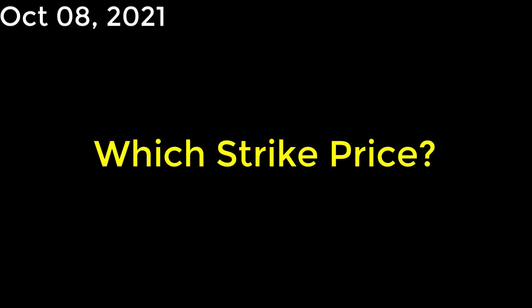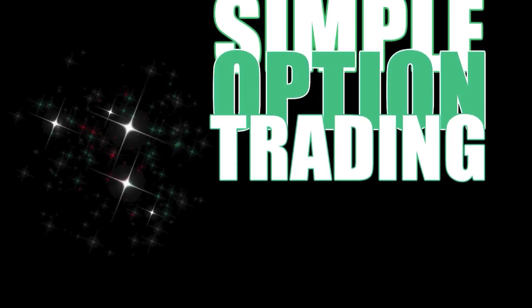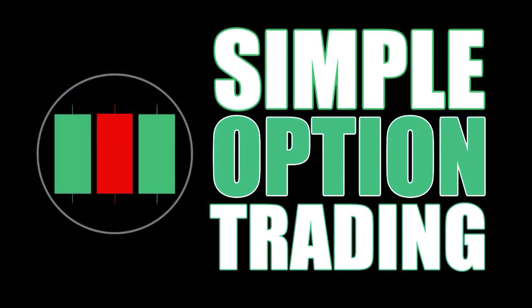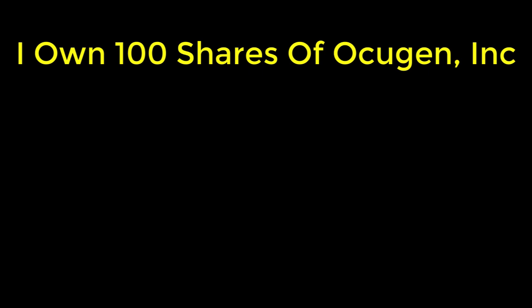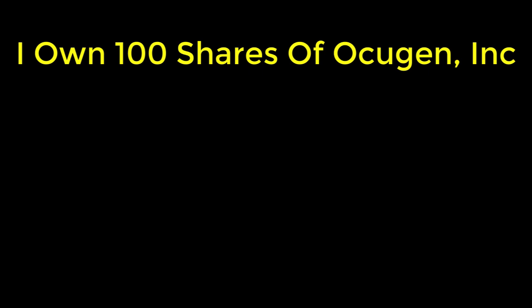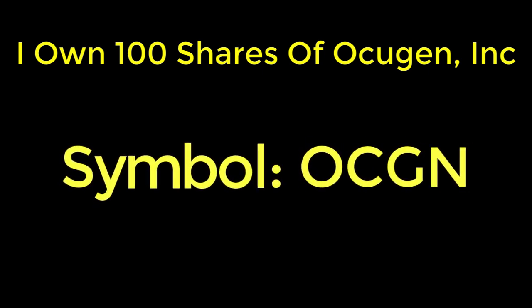I'm going to give you all the details, but I want your help to select the strike price. Do you think you can help me? I'll make this quick because there's only a few hours left in the trading day, and I want to submit this covered call option contract before the day runs out. I own 100 shares of AccuGen Incorporated, stock symbol OCGN.